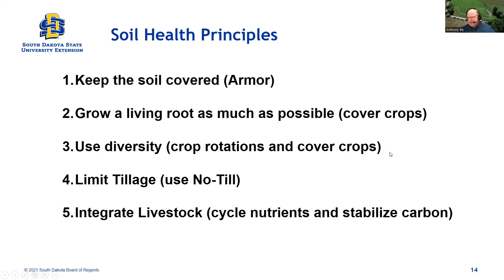Lastly, livestock integration. I'm an agronomist, not an animal scientist, but we have to realize that the livestock component really mimics the natural cycle that existed before pioneers converted this land to cropland. The buffalo, deer, and other animals thrived off the prairie in the natural cycle. Our livestock systems can fill that part — livestock is important in cycling those plant nutrients back into organic forms and putting them appropriately back on the landscape.